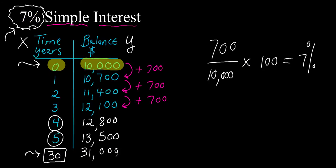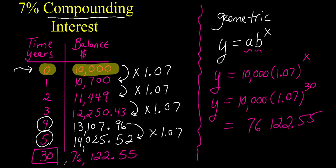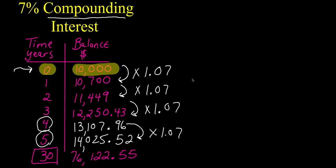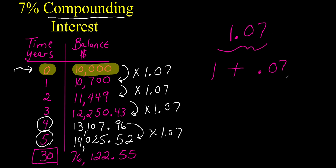I hope you can see the power of compounding interest. One final thing: where does the seven percent show up here? The common ratio of one point oh seven can be rewritten as one plus zero point zero seven, and that zero point zero seven piece is the seven percent. This one point oh seven is called the growth factor or common ratio, but the seven percent is embedded in that piece. I hope you found this video useful and helpful — thanks so much for watching, have a great day.